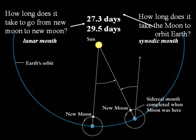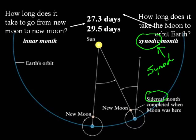There is a difference between the types of months — there are actually a couple of types. One is referred to as a sidereal month, and the other is referred to as a synodic month. We are used to the synodic month of 29 and a half days. A synod — S-Y-N-O-D — is a meeting, and many groups before they had calendars and clocks would call meetings by moon phases.